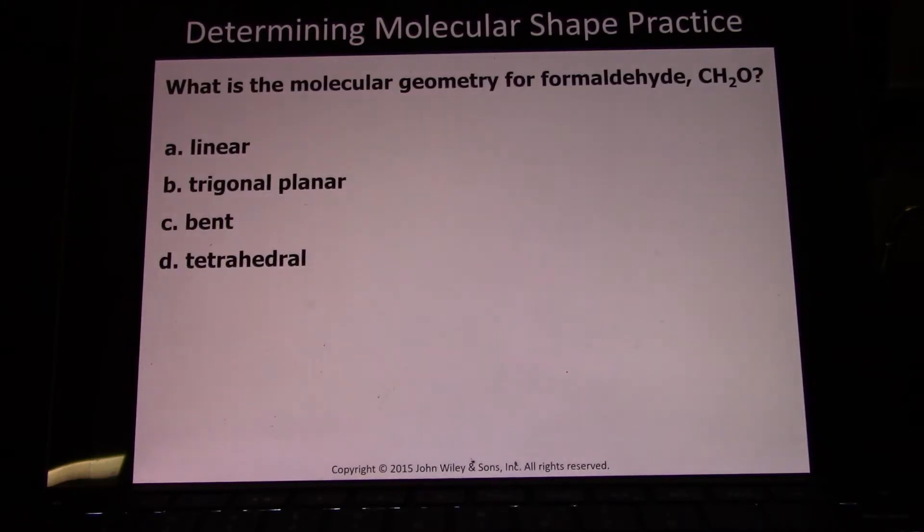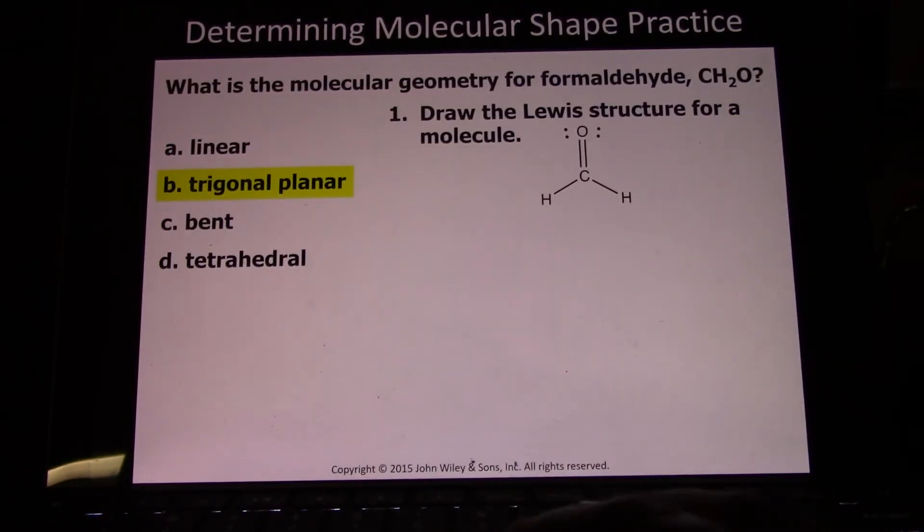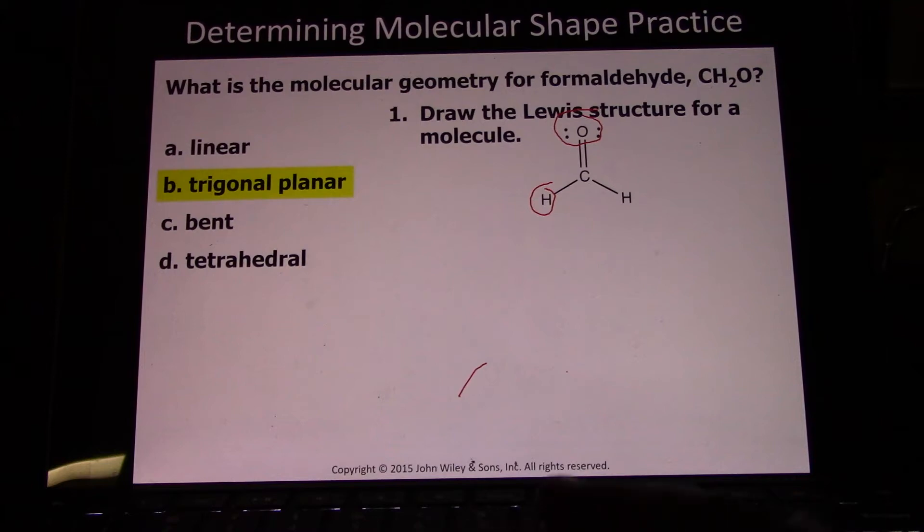Formaldehyde: We did this Lewis dot structure. There were three electron groups coming off the central atom. The farthest apart three things can get is 120 degrees on one plane—trigonal planar, because it forms a triangle in one plane of space.